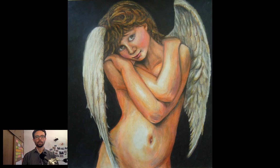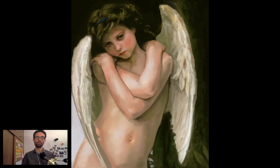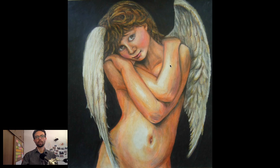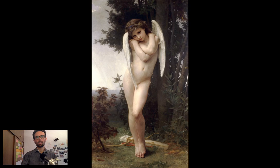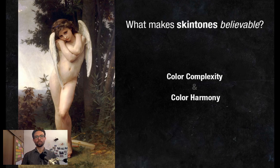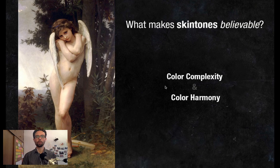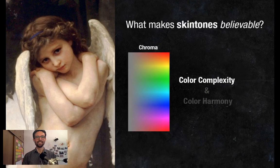In the copies, the hues and chromas are jumping too much. One of the things that makes skin tones feel alive and believable is change in hue and chroma, but if we overdo it, it doesn't work — it becomes garish. I call this color complexity and color harmony, and both apply to hue and chroma.